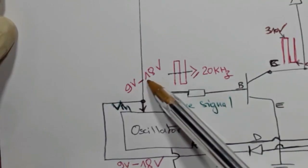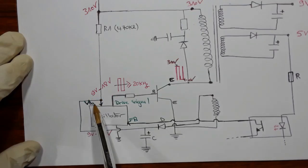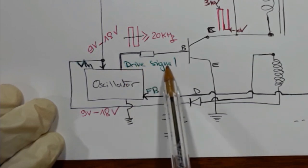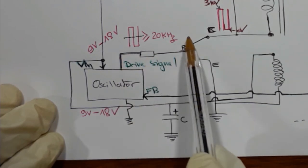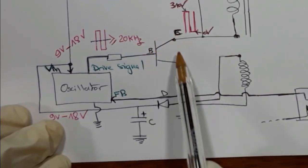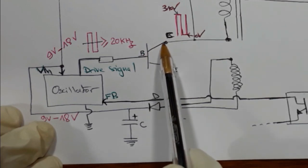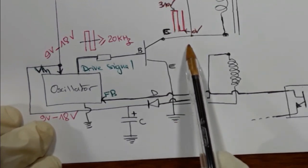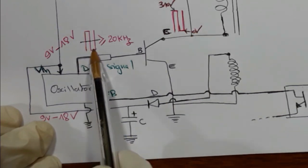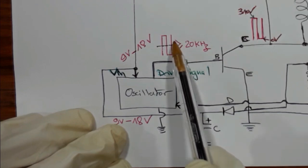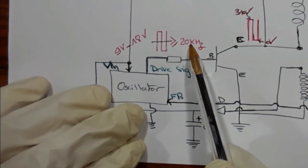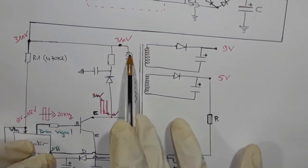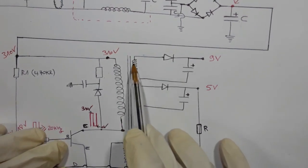This voltage is the V-in for the oscillator. When the oscillator receives its power, it generates a drive signal that passes through a resistor and activates the transistor — base, collector, emitter. When activated, this transistor generates a frequency signal with a high peak of 300V and zero volts at the low, at a high frequency of 20 kilohertz or more. The MOSFET passes current through the transformer, transferring energy to the secondary coils.